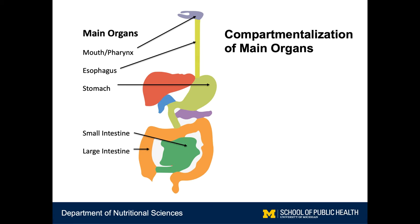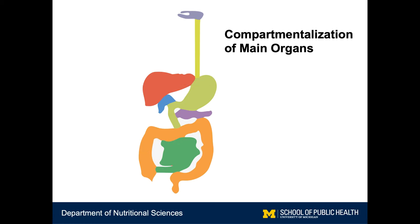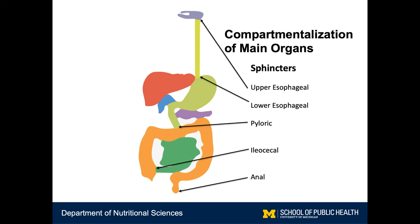To allow for food to travel in only one direction, digestion is compartmentalized into these main organs. And to prevent food from going in the wrong direction, these organs are separated by a series of gateways called sphincters. Sphincters are a set of muscles that, when constricted, do not allow food to pass through, but when relaxed, do allow food to pass through.